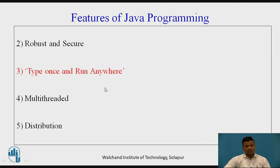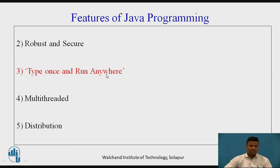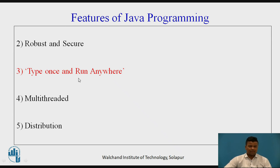Java programming is a robust and secure programming language. Robust means it can withstand all properties in any environment, and Java can be stored and run on every OS. We can write once and run anywhere — for example, you can type the program at any remote place and run it at home.